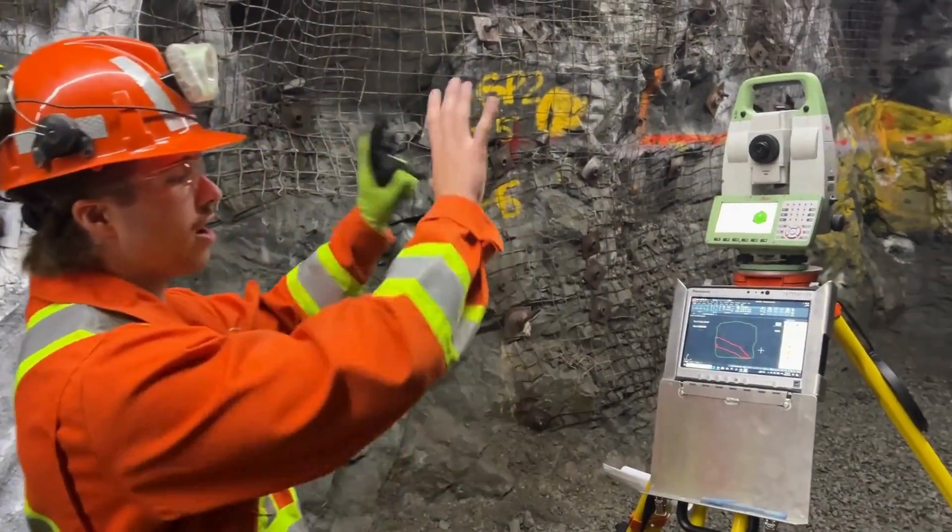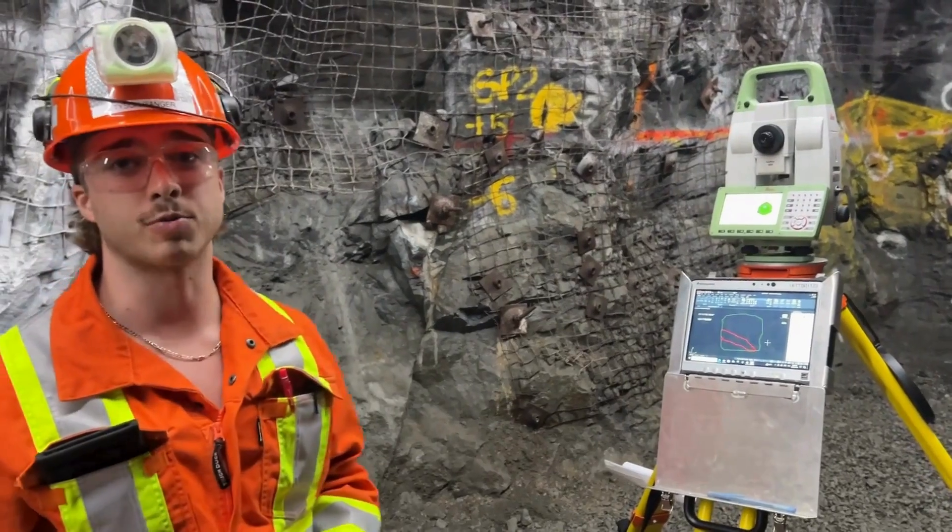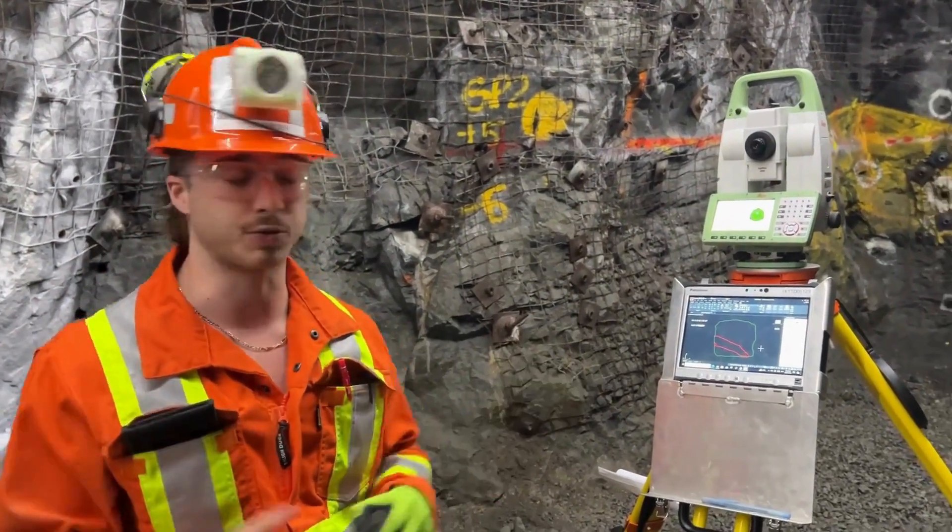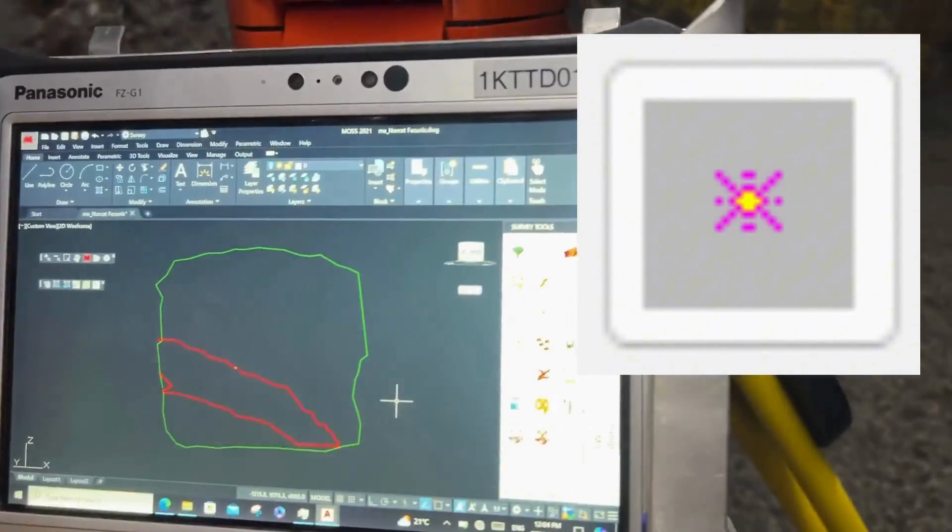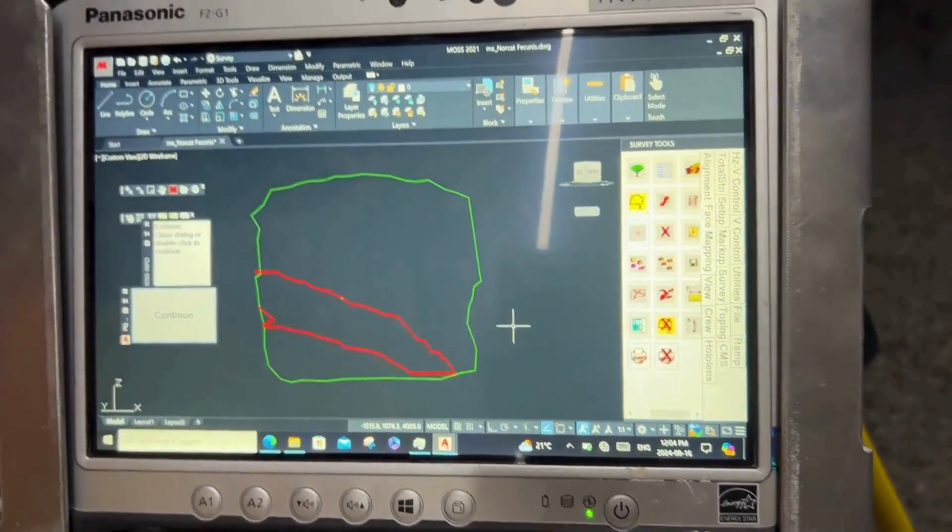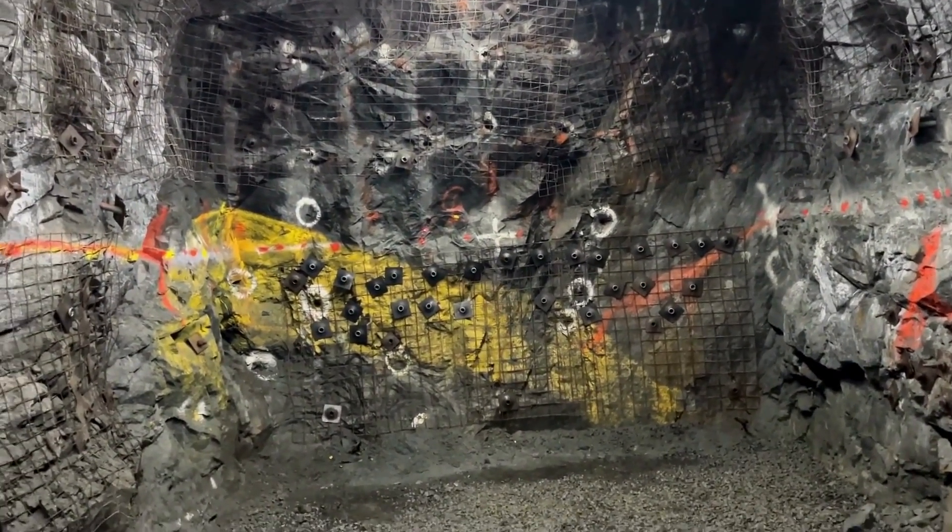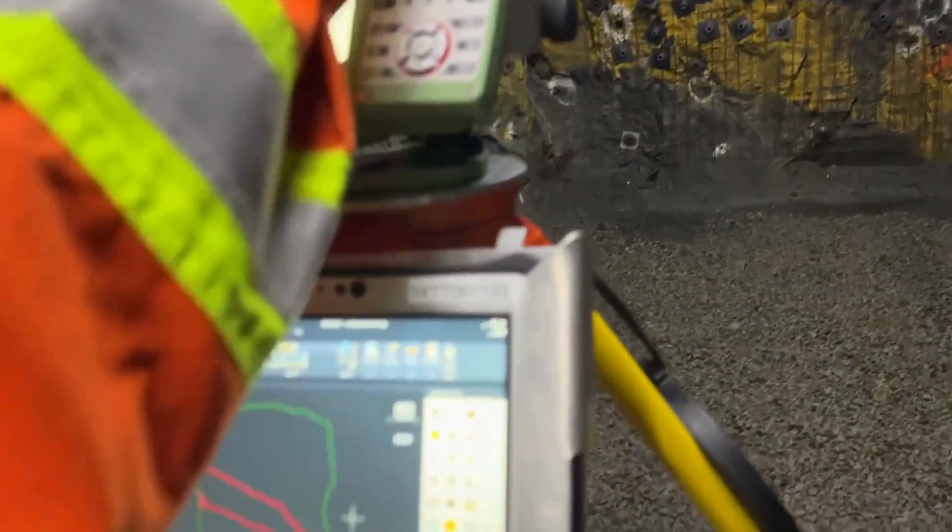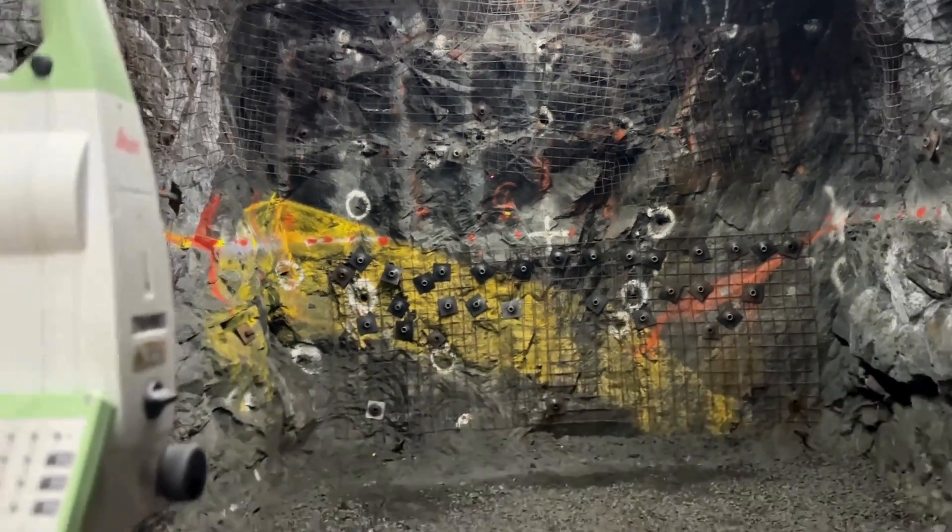So now that we've got our face profile and we've mapped our vein on the face, what we're going to do is we're going to map our pretend channel samples as well. So come over here. We'll press this button here. Now what this button allows us to do is it allows us to place the laser on the face, and from those specific coordinates, we can attribute an ID. So we'll say on the face, we've got a channel sample right there. What we'll do is we'll come back to the tablet.